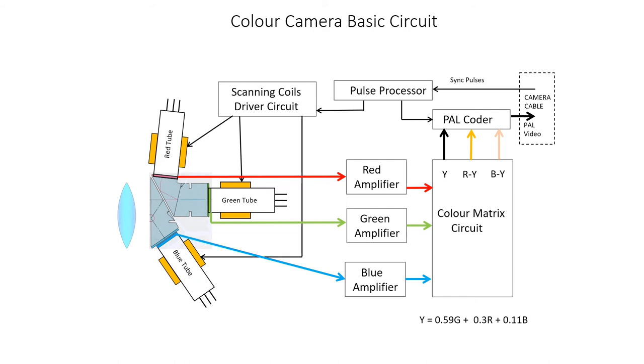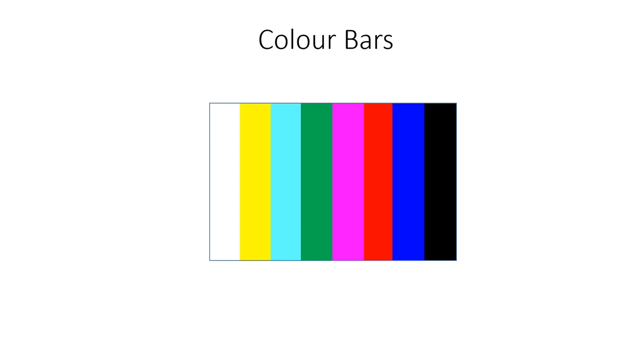The luminance signal Y is 0.59G plus 0.3R plus 0.11B. If the camera is pointed at a set of color bars as shown in the picture from white through yellow, cyan, green, magenta, red, blue and black, then the signals outputted from the color matrix are as follows.